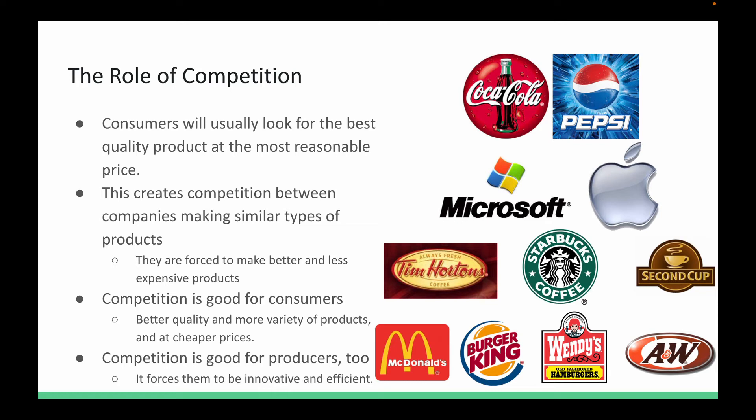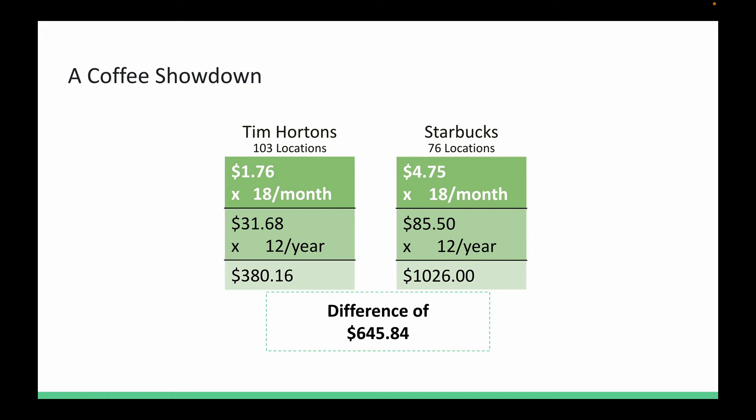Let's look at the coffee wars: Tim Hortons versus Starbucks. In the Edmonton area there are about 103 Tim Hortons locations and 76 Starbucks locations. Both provide coffee and are in competition with each other. I've taken their most popular drinks: at Tim Hortons a medium double double goes for $1.76, and the most popular drink at Starbucks — a vanilla latte — goes for $4.75. If a working adult buys coffee 18 times a month, that's $31.68 at Tim Hortons versus $85.50 at Starbucks.